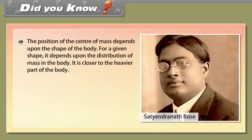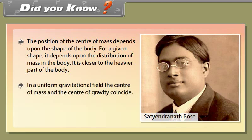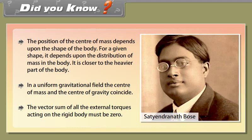The position of the center of mass depends on the shape of the body. For a given shape, it depends on the distribution of mass, and it is closer to the heavier part. In a uniform gravitational field, the center of mass and center of gravity coincide. The vector sum of all external torques acting on a rigid body must be zero for equilibrium.